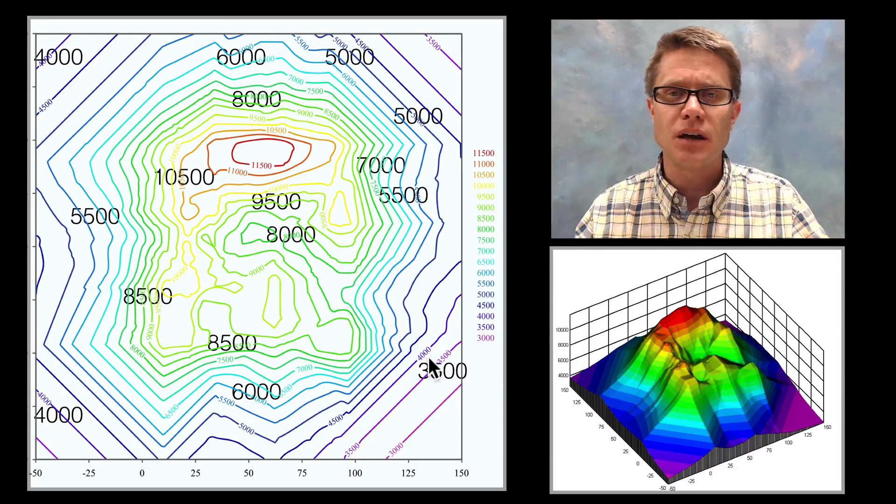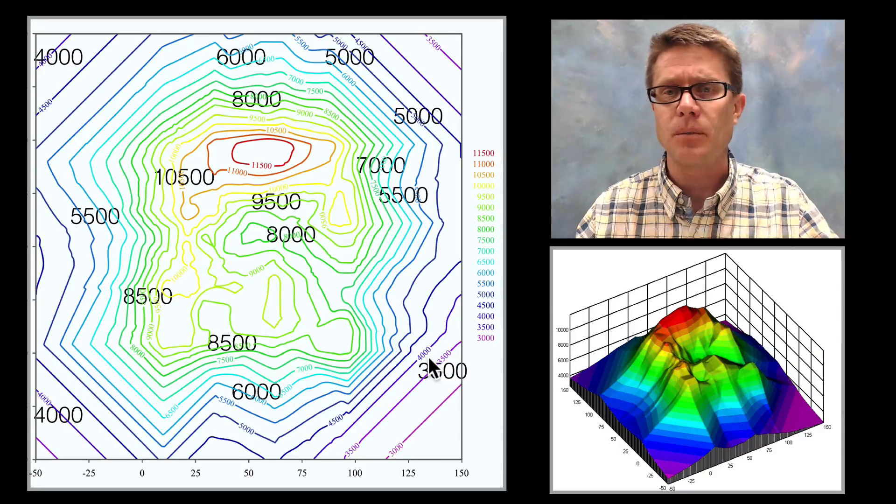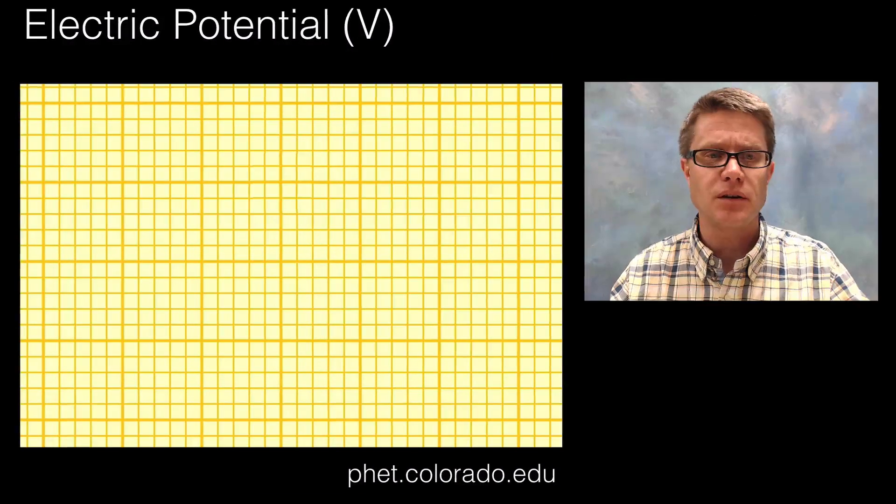One thing you'll notice is that none of these iso lines ever cross. They're never going to have the same elevation for example at one point. And we'll find the same thing in physics.